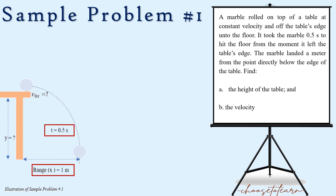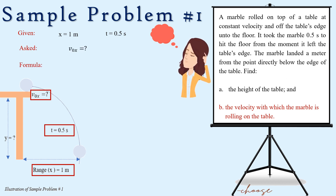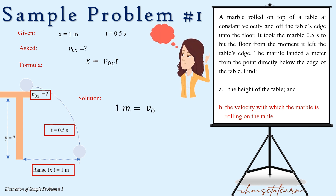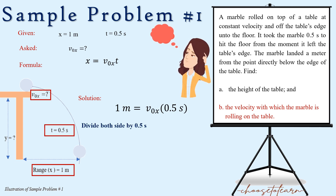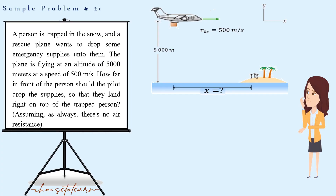Now find the velocity with which the marble is rolling on the table — the initial horizontal velocity. Using x equals initial horizontal velocity times time: 1 meter equals initial horizontal velocity times 0.5 seconds. Dividing both sides by 0.5 seconds gives an answer of 2.0 meters per second.